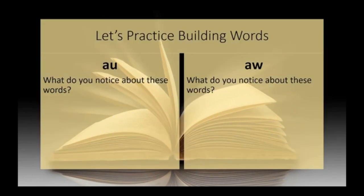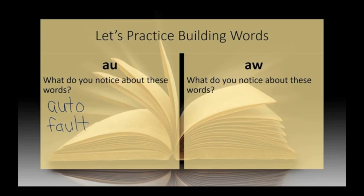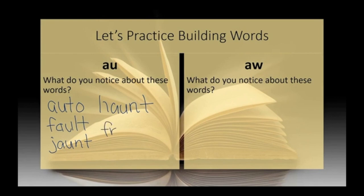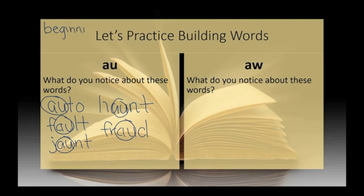Let's practice building words by looking at AU and AW to determine when to use them. For AU words, we look at words like auto, fault, jaunt, haunt, and fraud. Notice where you find the AW sound in all of these words — each one has AW either at the beginning or in the middle of the word or syllable.